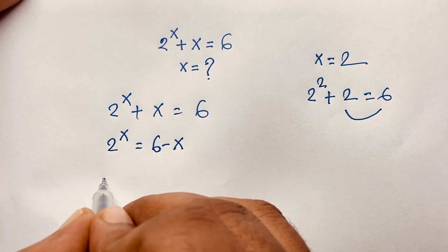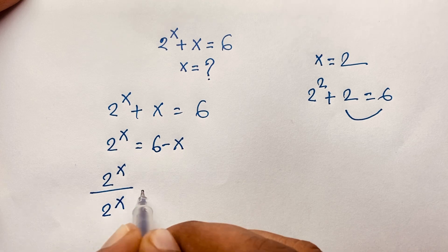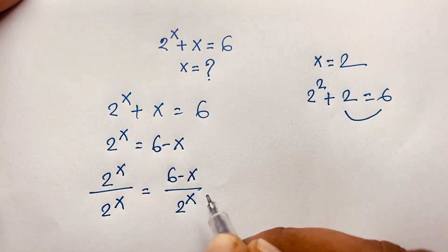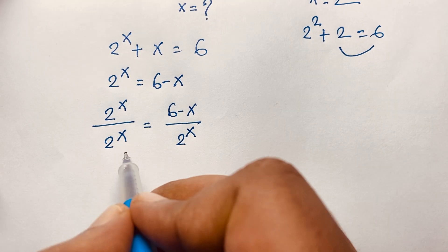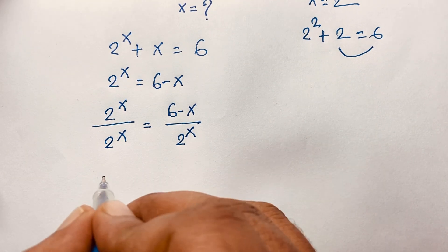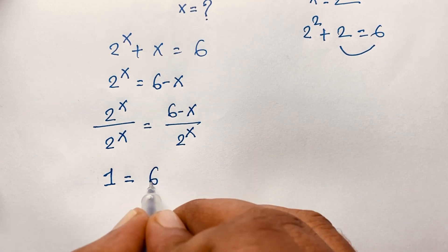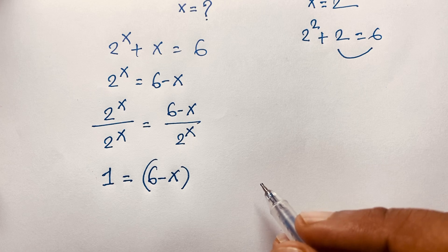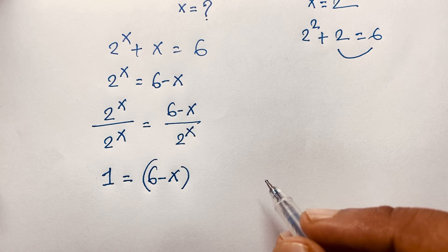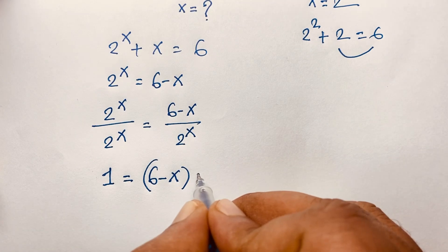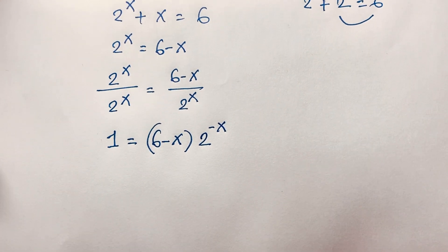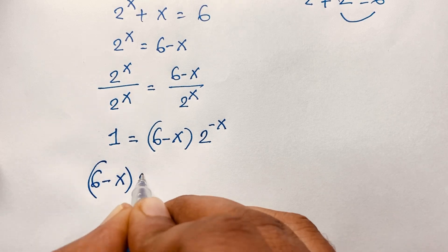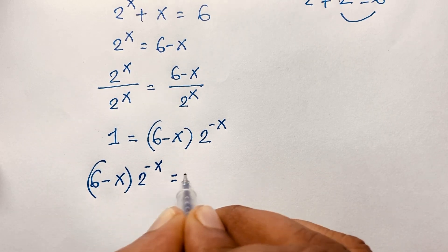Now, if I divide both sides by 2 to the power x, we get 1 is equal to (6 minus x) over 2 to the power x. Using the exponential law that 1 over a^n equals a^(−n), I can say this becomes (6 minus x) times 2 to the power negative x, and that is equal to 1.